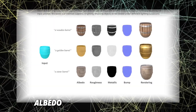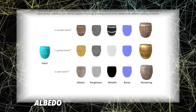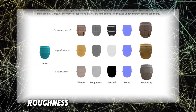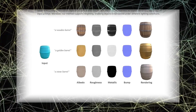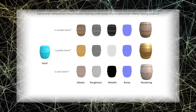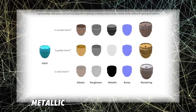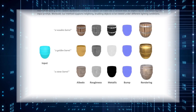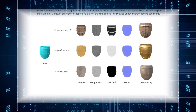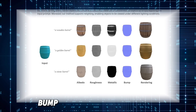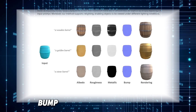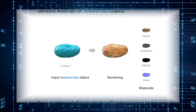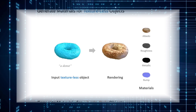Albedo: the base color of the material. Roughness: controls how smooth or rough the surface appears, affecting its reflectivity. Metallic: defines how shiny and reflective the surface is, similar to metals. Bump: adds surface details, creating textures and imperfections. Material Anything handles all of these properties seamlessly.